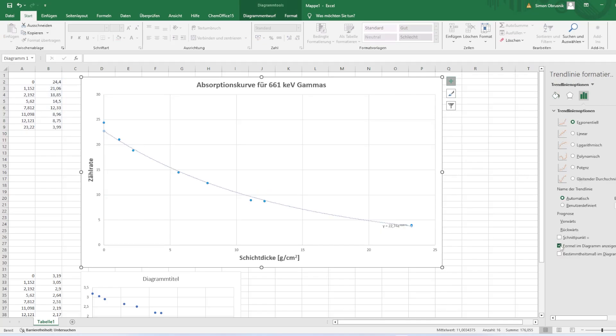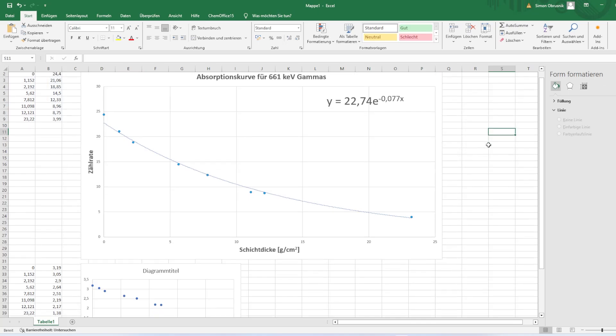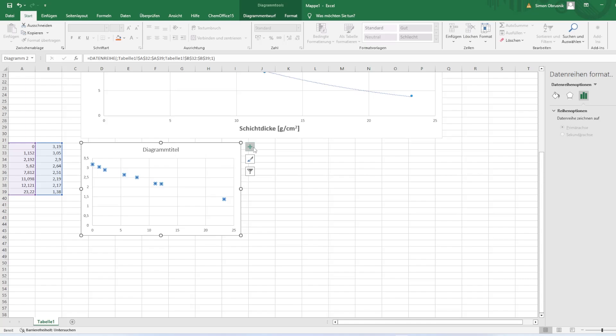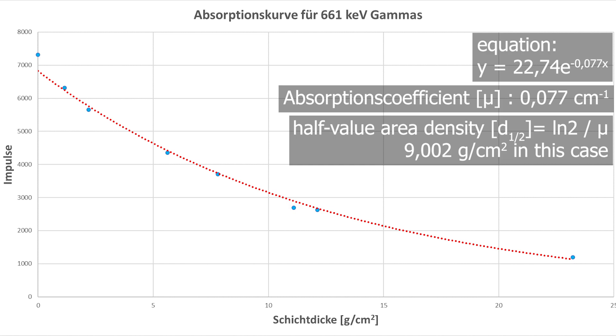From the exponent we can determine the so-called absorption or attenuation coefficient. We'll keep that in mind for later. I also manually took the natural logarithm of the counting rates and plotted them against the thickness. This gives us a linear function with the slope representing the absorption or attenuation coefficient: 0.077 reciprocal centimeters. If you divide the logarithm of two by that, you get the half value area density small d one half with the unit gram per centimeter squared.